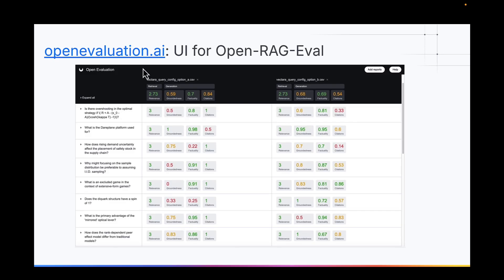There's also a very cool user interface. Once you finish running your evaluation, you can look at the files yourself, but that tends to be pretty complex. So you can drag and drop those files onto openeval.ai, as shown here, and you get a really cool UI that shows you all the queries you ran and all the things you want to compare — between the retrieval scores and the different generations.